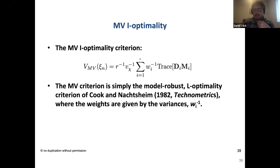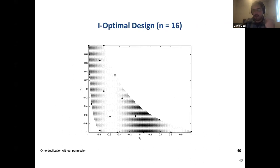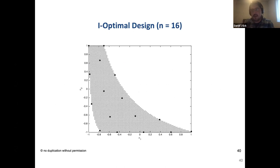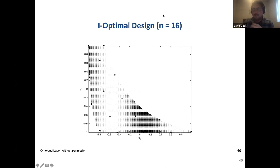An I-optimal design with 16 runs is derived for the pump problem, performing well in this case. The procedure works for multivariate dimensional analysis: there are recommendations for cases that fall outside the theorem's conditions, and the conditions' necessity is articulated in the paper. Tom Albrecht will now present a real engineering example of this procedure.